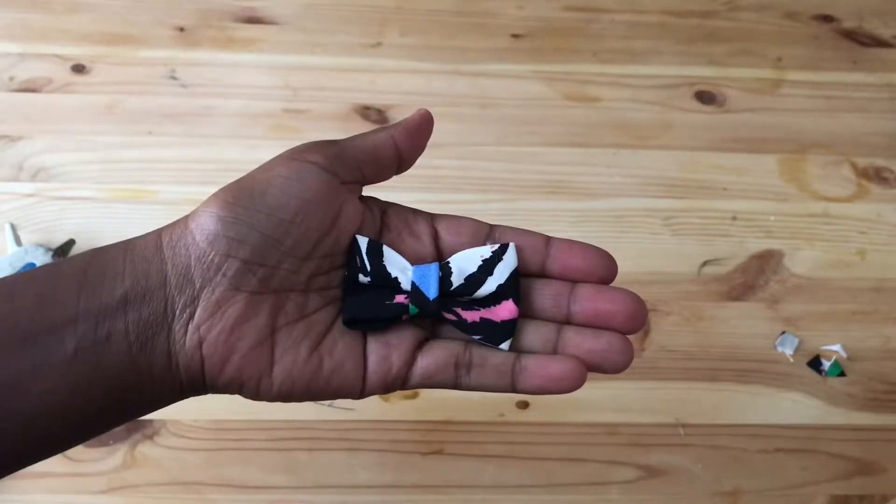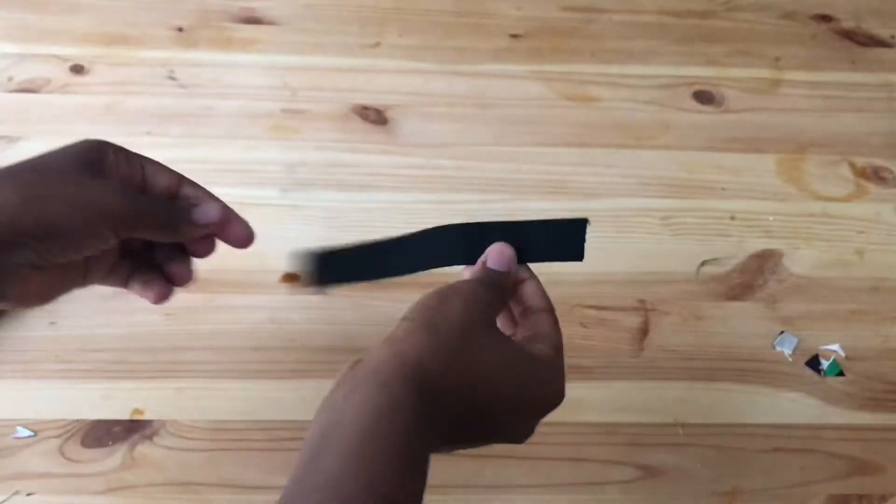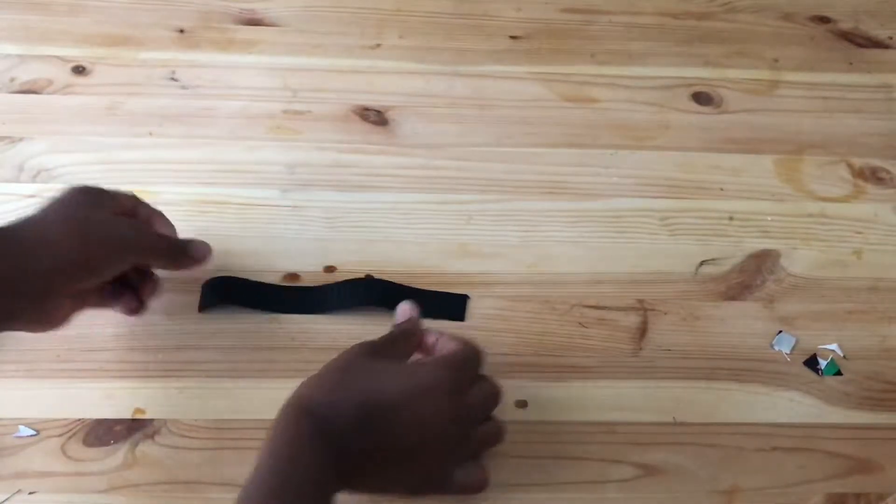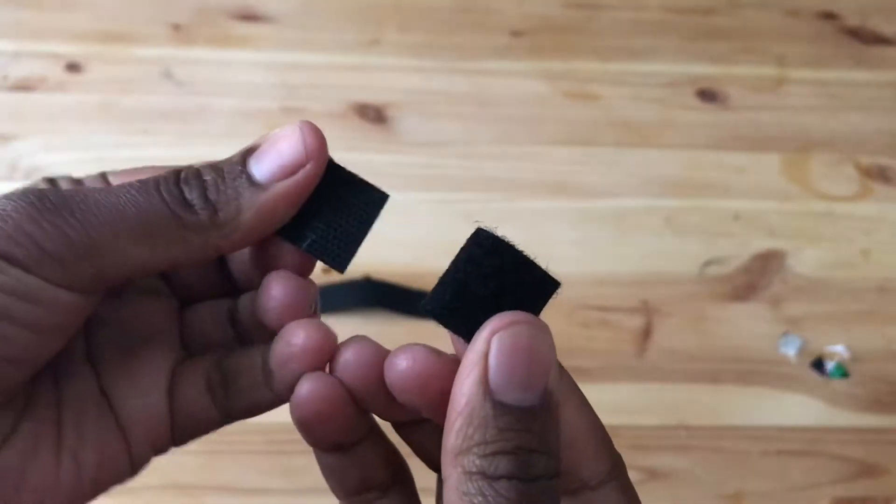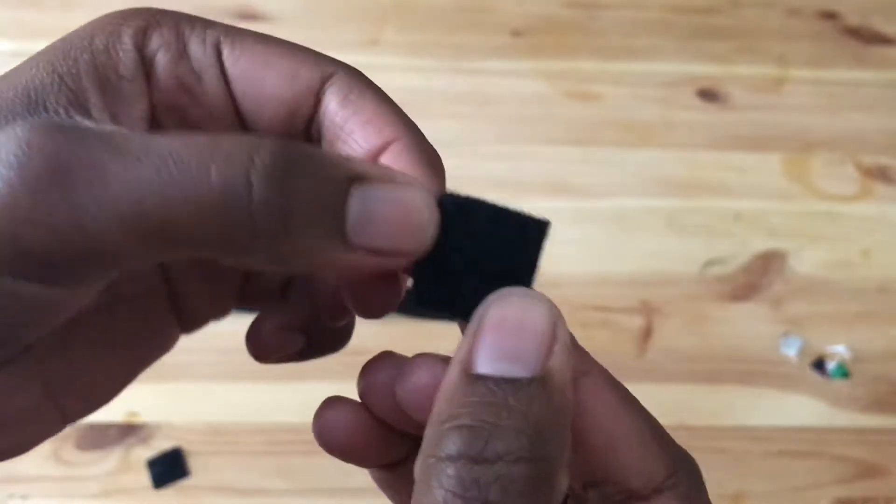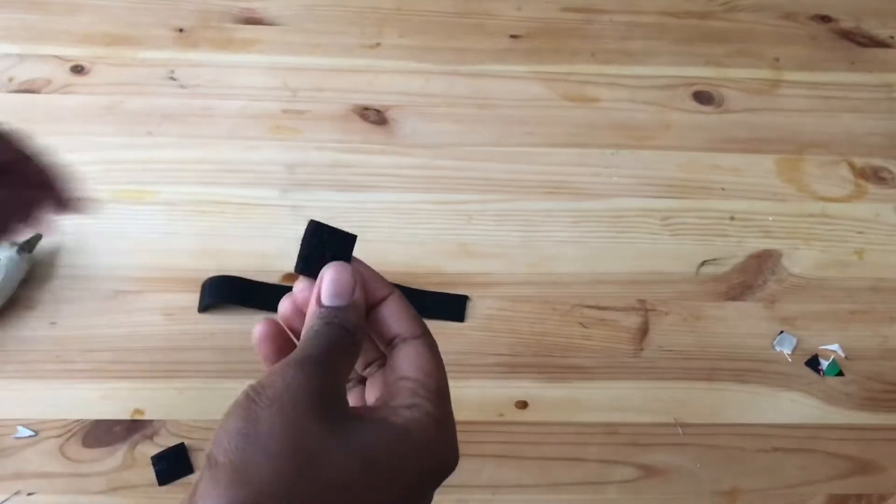So we have our first bow. And then we take our elastic that we just cut and we take our velcro piece, pull it apart, and then we take one of the pieces and we're going to hot glue the back and stick it to the front side of the elastic piece.